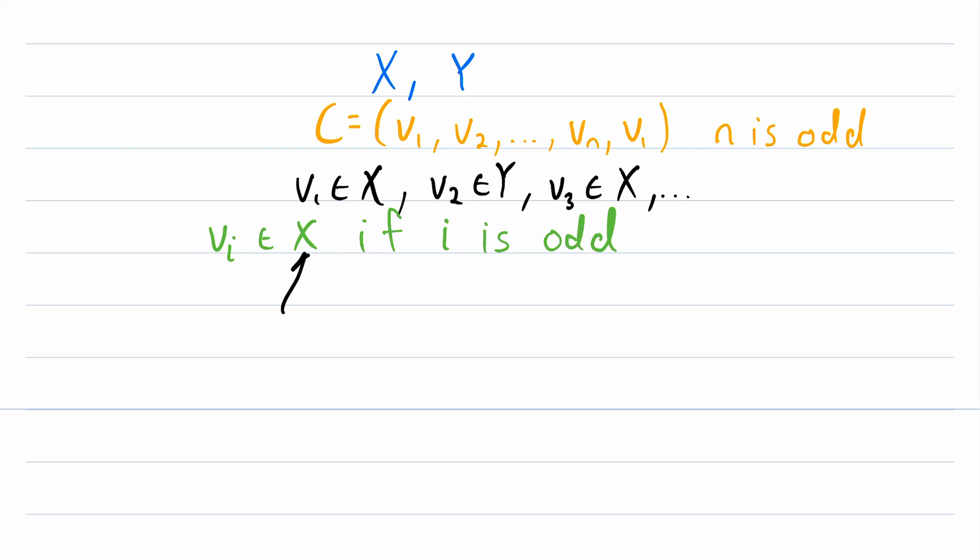So what vertex does that mean must be in X? Well, that would be this little guy right here, vn, because remember, n is odd. So we have that vn is an element of X. But since vn and v1 are consecutive vertices in this odd cycle, that means that they have to be adjacent. So we could write that vn, v1 is an element of the edge set of this graph we haven't named. Let's just call it G. And this is our contradiction.